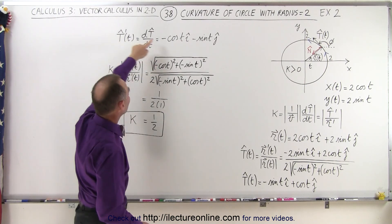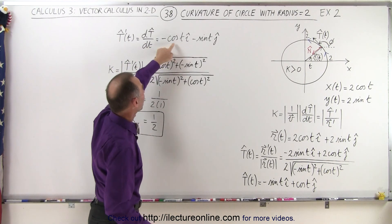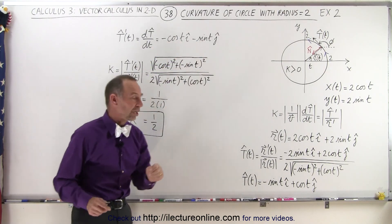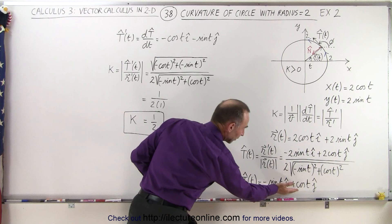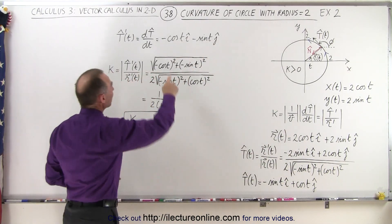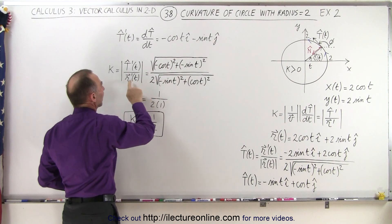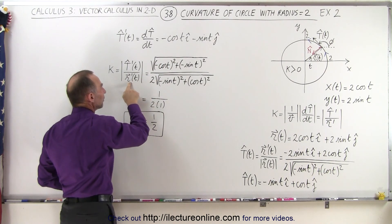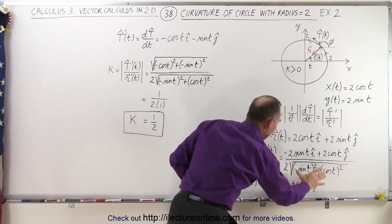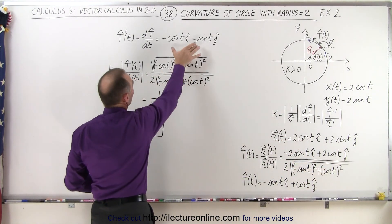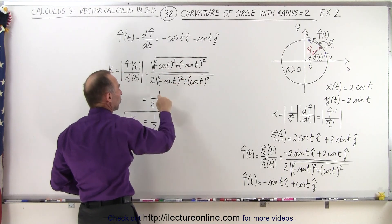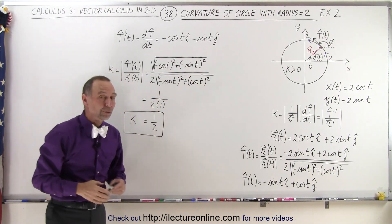Taking the derivative gives us negative cosine of t in the i direction, minus sine of t in the j direction. We then take the magnitude of that and divide it by the magnitude of the derivative of the position vector, which we already have. Placing that in the denominator and taking the magnitude in the numerator, those two portions turn into 1, so we end up with 1 over 2.